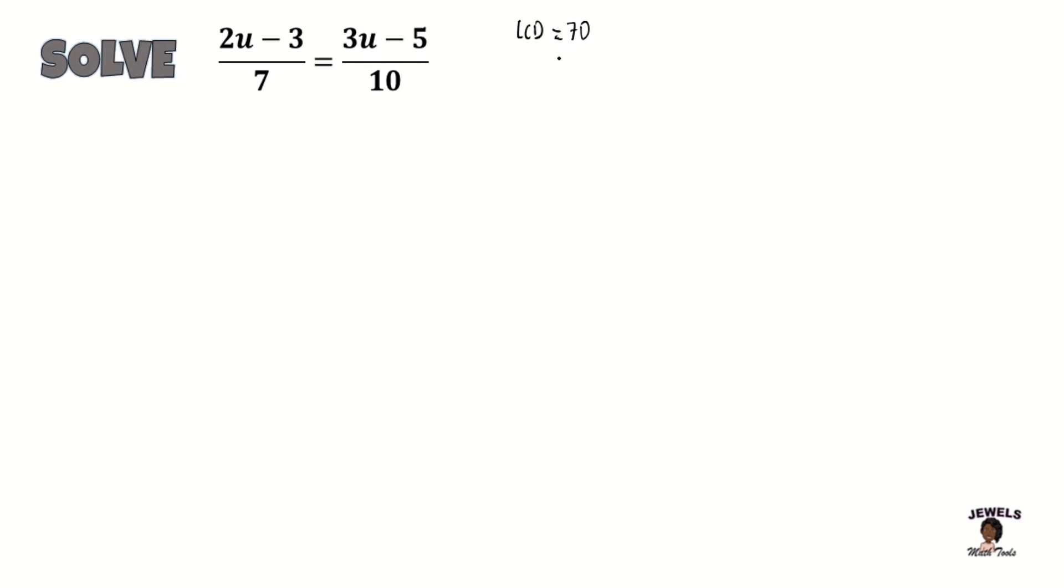So now that we have our LCD, let's convert our fractions into their equivalent forms where both of them have a denominator of 70. We're going to begin by converting our first term, which is 2u minus 3 all over 7.